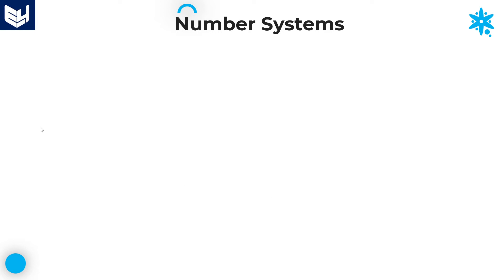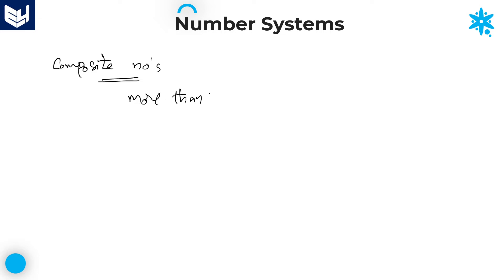Next, what is meant by a composite number? Composite numbers are numbers which have more than two factors. Those numbers are called composite numbers.